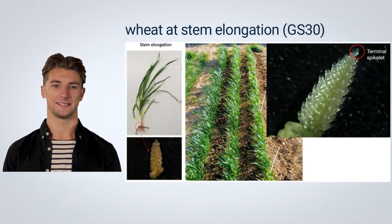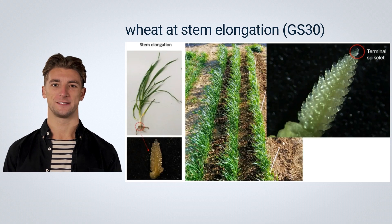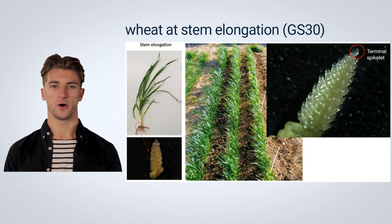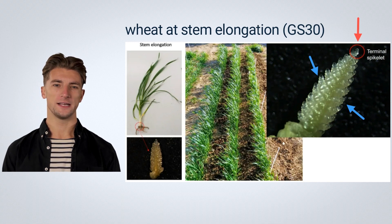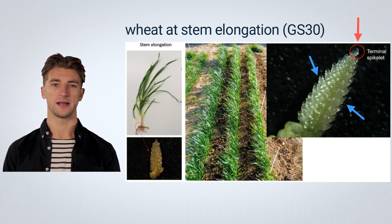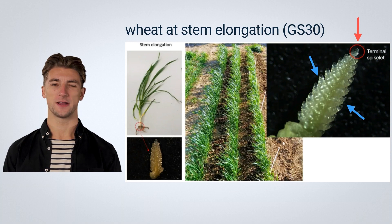These pictures are wheat at stem elongation. It seems like a vegetative stage because only green small leaves are observed, but this period is regarded as the initiation of the reproductive stage. After the terminal spikelet is determined, spikelet primordia are actively developed, indicating that floret number is determined during the period between GS30 and GS65. That's why onset of stem elongation is regarded as the reproductive stage.